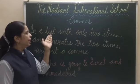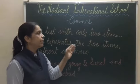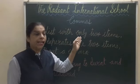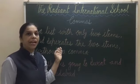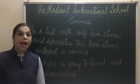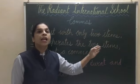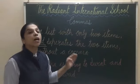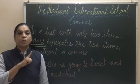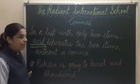Now students, in a list with only two items, 'and' separates the two items — without a comma. Comma ke bina. It means agar sirf two items hain, tab us mein comma nahi aayega — 'and' aayega.